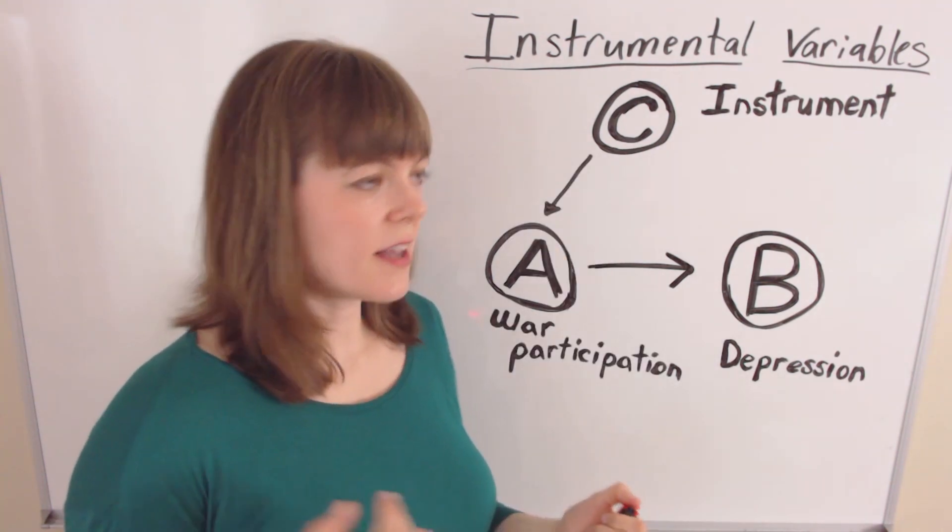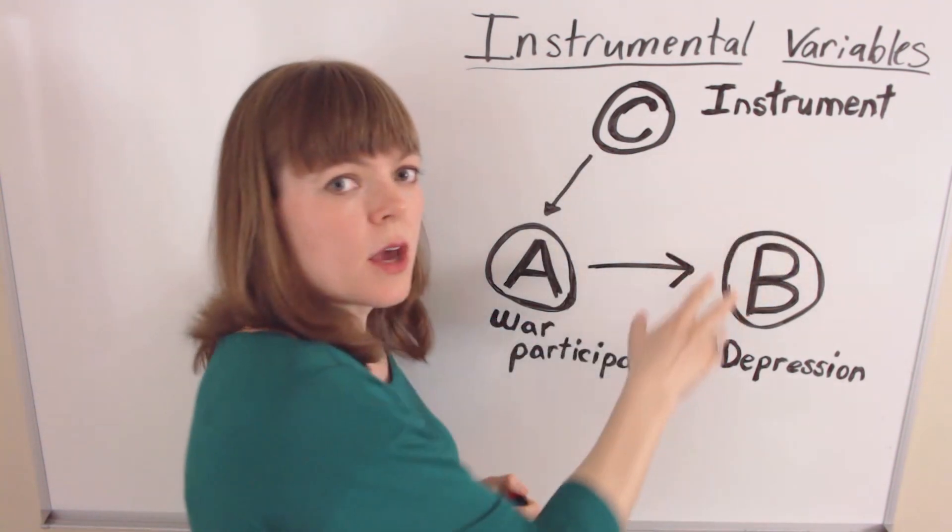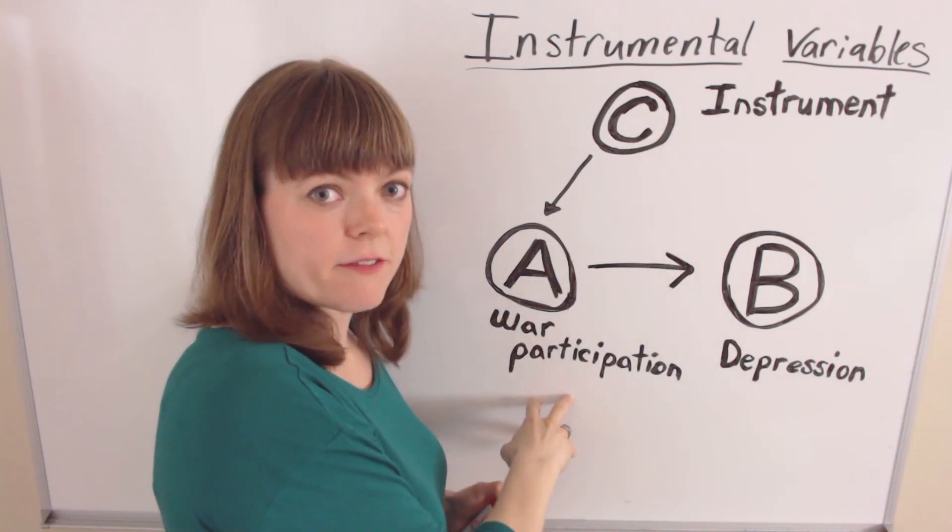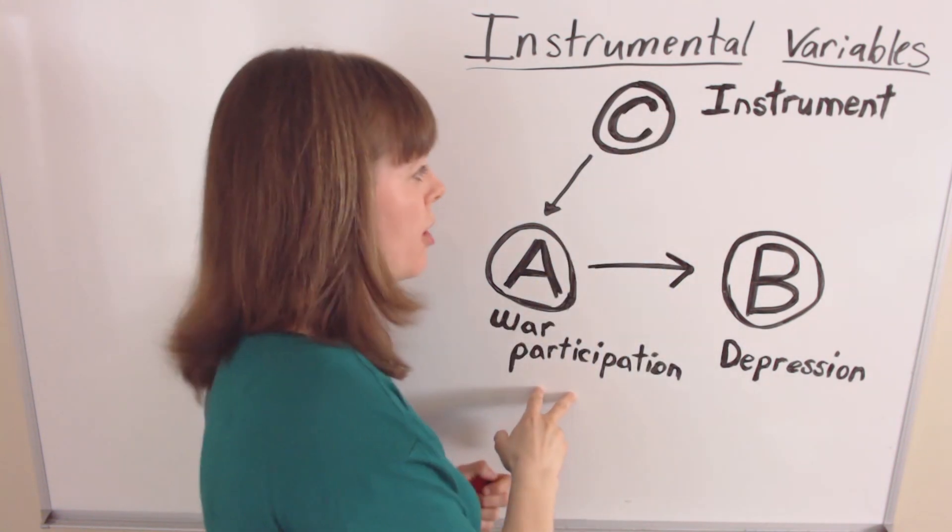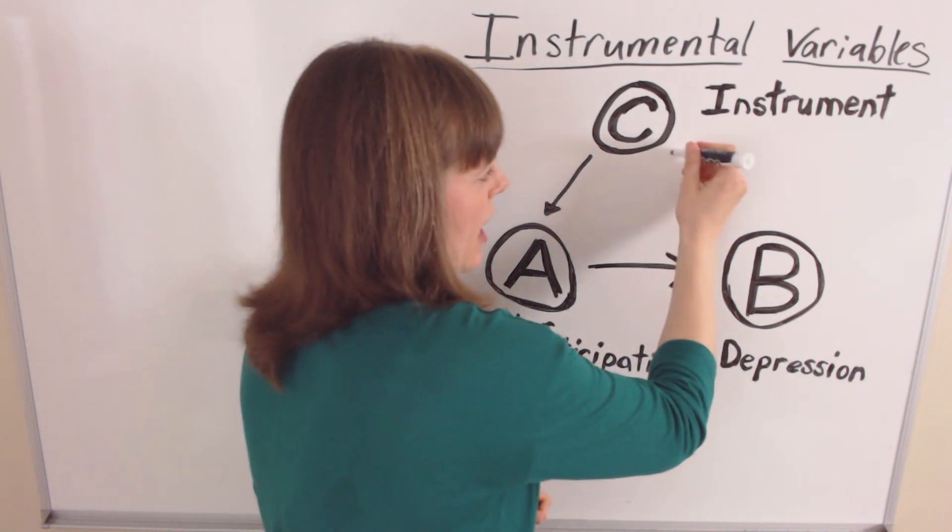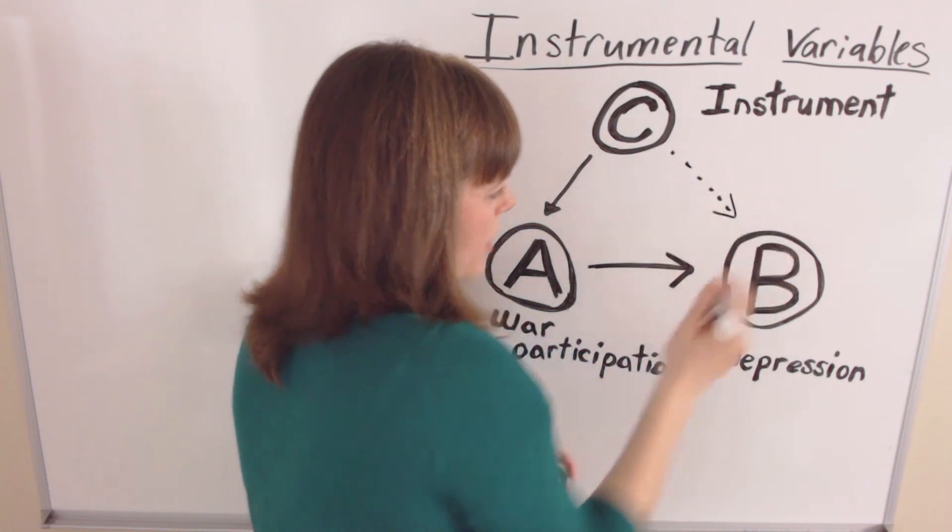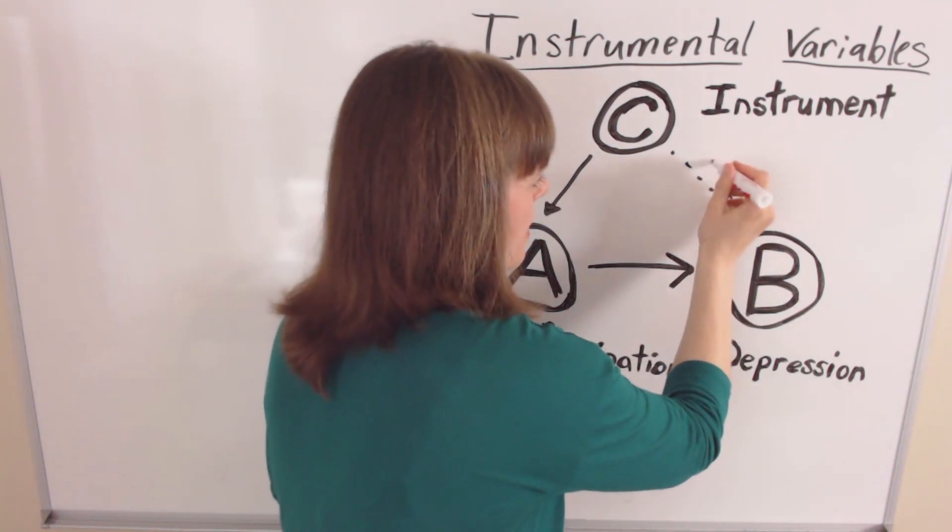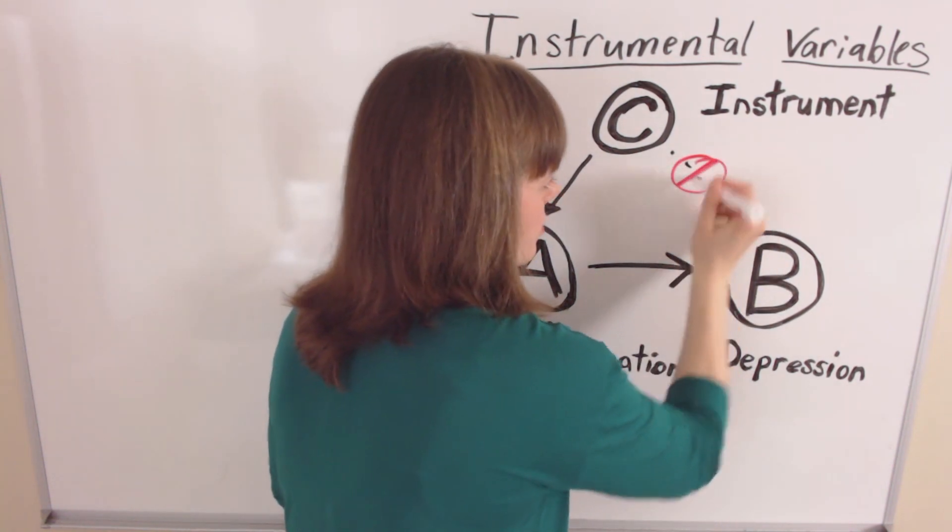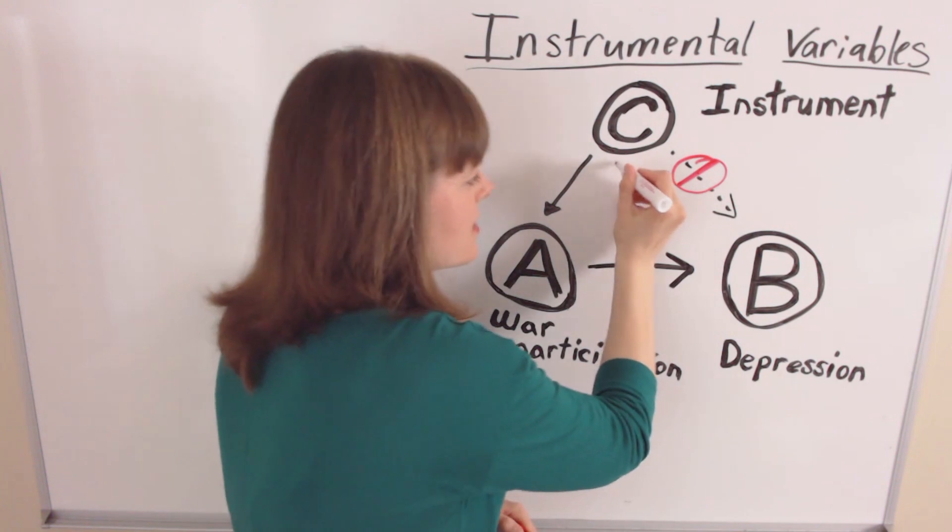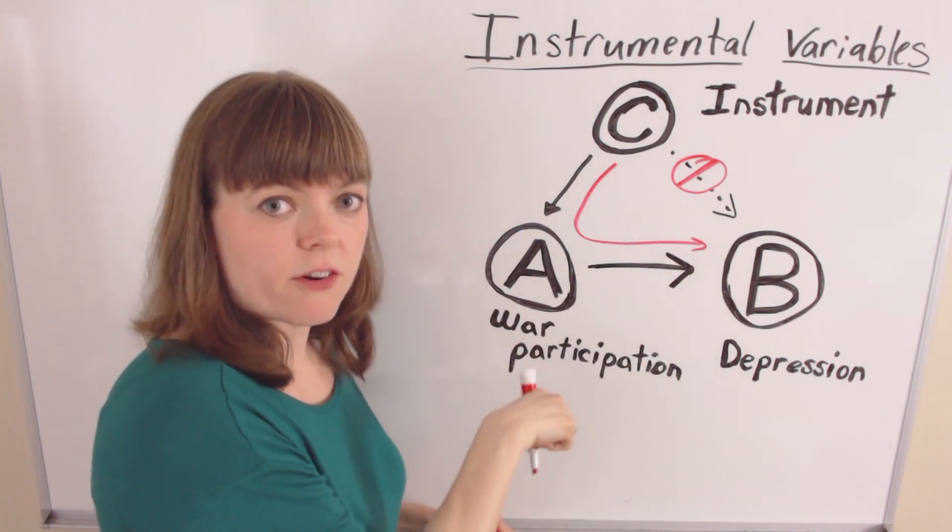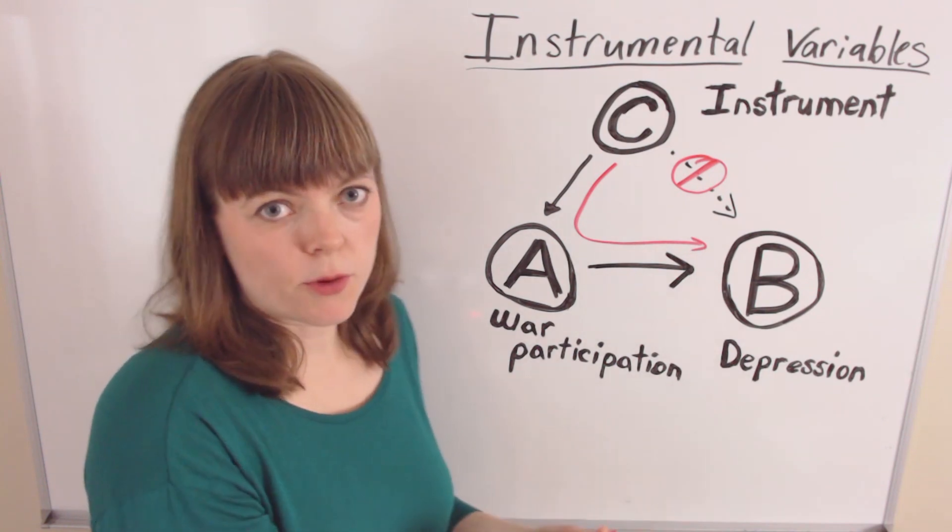We're going to establish causality using an instrument, which is a third variable that has an association with our independent variable or our explanatory variable, but this third variable should have absolutely no association with our response variable or our dependent variable. Absolutely no association there except through the means of our independent variable or explanatory variable.